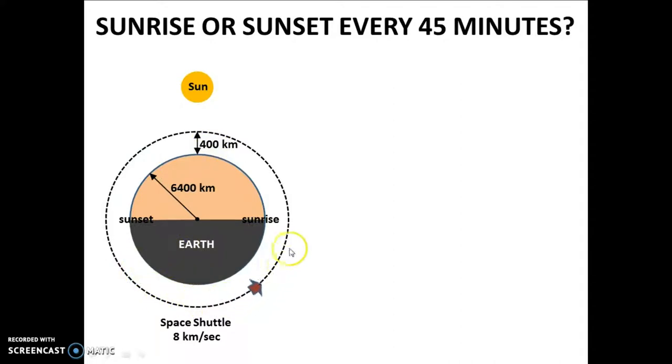Now, every time the space shuttle approaches this point, it is entering into the light of the sun, which is equivalent to a sunrise. Whereas, every time the space shuttle enters towards this point, it is entering into the shadow region, which is equivalent to a sunset.